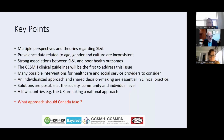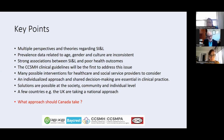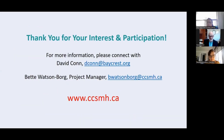To conclude: there are multiple perspectives and theories regarding social isolation and loneliness. The prevalence data regarding age, gender, and culture are inconsistent, but we know there are strong associations with poor health outcomes. Our guidelines will be the first to address this issue, as far as we know, and there are many possible interventions to consider. We emphasize an individualized approach and shared decision making, and we believe solutions are possible at the societal, community, and individual level. A few countries have taken a national approach, and we might ask: what approach should Canada take? Should we take a national approach? I'd love to get your thoughts on that. Here is my email if you have any questions after this session, along with the email of our project manager Betty Watson-Borg, and the CCSMH website.